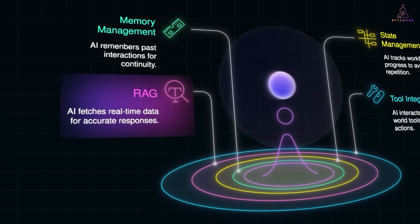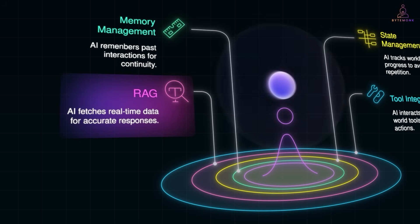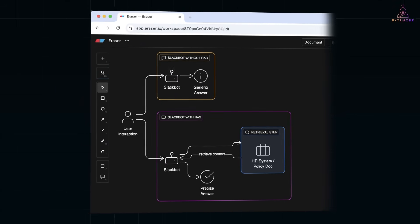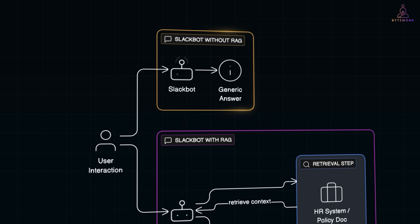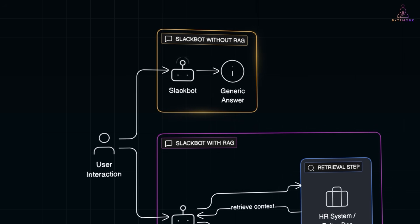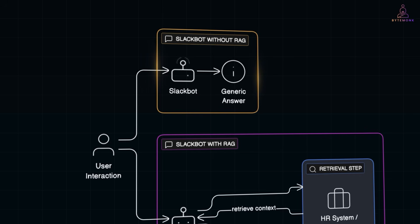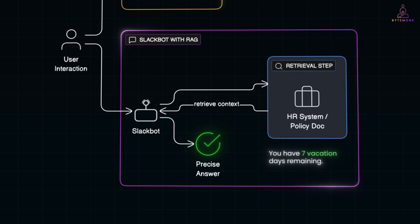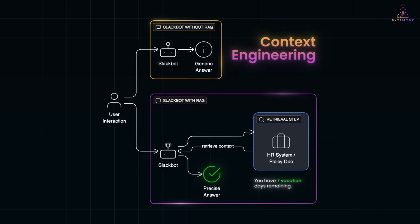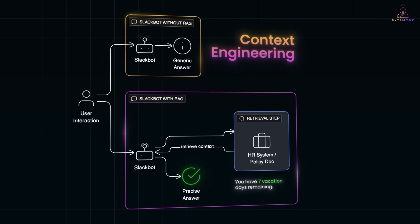RAG, or Retrieval Augmented Generation, is a big one. Instead of relying on what the model learned during training, RAG lets the AI fetch the latest information from your actual data sources before it answers. Imagine a Slack bot in your company. Someone asks, 'How many vacation days do I have left this year?' Without RAG, the AI might give a generic or outdated answer like 'most companies offer 15 days of PTO.' With RAG, the bot first retrieves the latest information from your company's HR system or policy document, then generates a precise answer: 'You have seven vacation days remaining. To request time off, go to the HR portal and submit a leave request.' That's context engineering — making sure the AI is grounded in your real, evolving company data instead of relying on guesses.